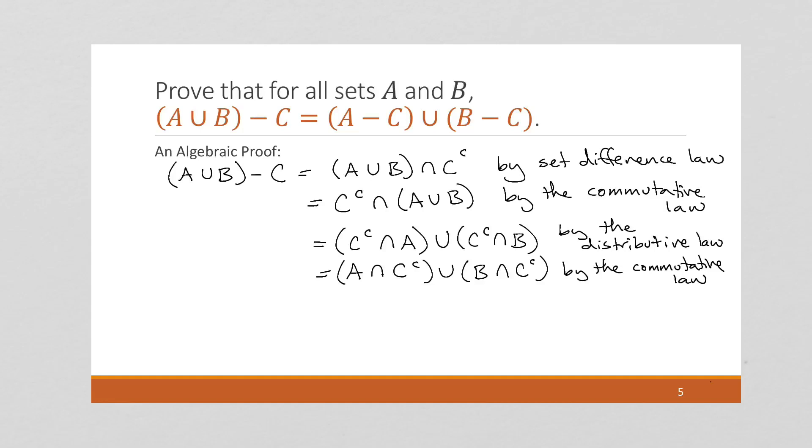Here we go. And now once they're in this order, we can use the set difference law. And we can say this is (A minus C) union (B minus C), which is exactly what we're trying to do.